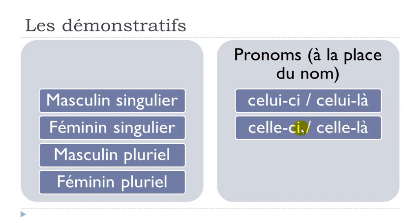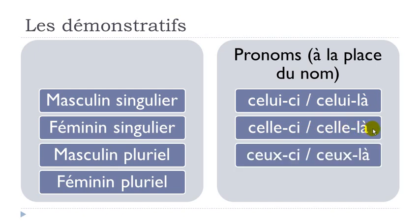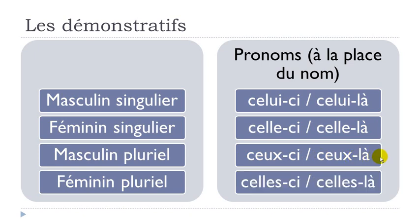Same thing with the feminine form: 'celle-ci', 'celle-là'. For the masculine plural: 'ceux-ci' — remember, the final X is not pronounced, so you get the sound 'ceux' — 'ceux-ci' and 'ceux-là'. Feminine plural: 'celles-ci' — don't pronounce the final S — 'celles-ci', 'celles-là'.